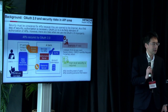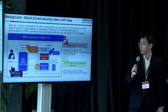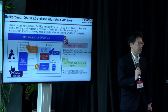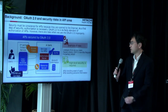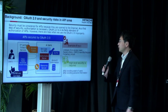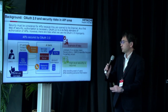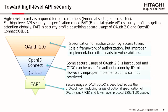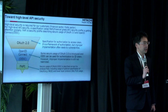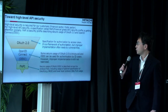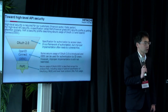However, there are risks when we use OAuth 2.0 improperly. Some attacks are known. If an access token is leaked to malicious people, they can call the API and obtain the user's resource. High-level security is required for our customers, such as banks and the Japanese government. For high-level API security, a specification called FAPI — Financial Grade API Security Profile — is getting attention globally.